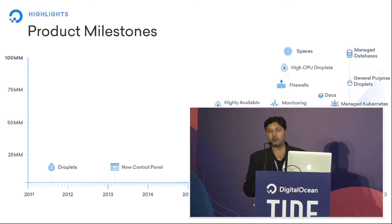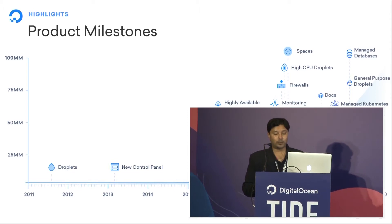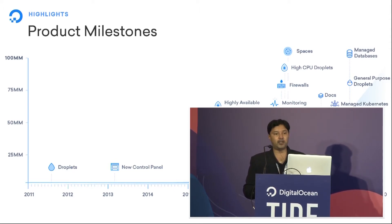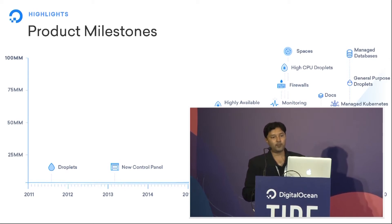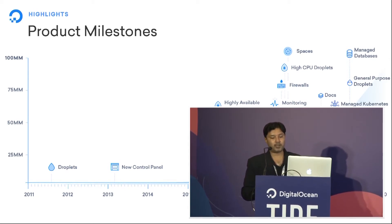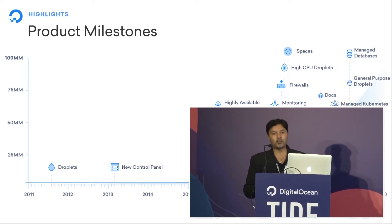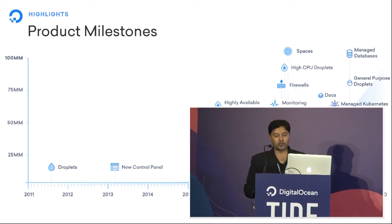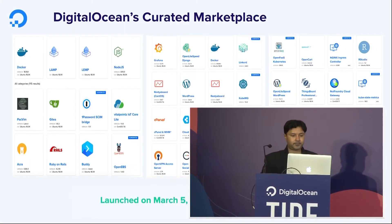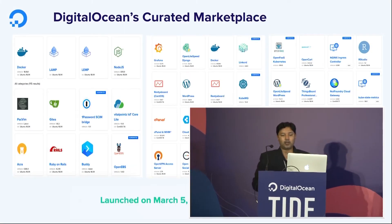Things like accounts, floating IPs, firewalls, monitoring solutions, and load balancers. And 2018 and 2019 have been a bigger success for us with things like Kubernetes, managed databases, and Spaces, which is block storage — those things coming into the picture.